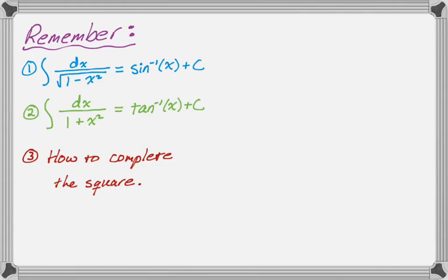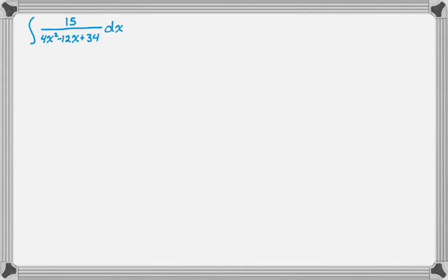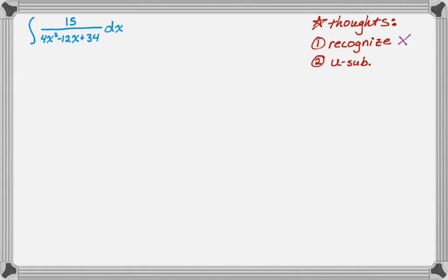So let's dive in and do an example. This first example has a lot of algebra in it. We want to do the integral of 15dx over 4x squared minus 12x plus 34. When I see an integral, my first thought is: do I recognize it? In this case I do not. My second thought is: is there some obvious u-substitution? Nothing here would work. My next thought is: is there a weird quadratic? There is, so I probably want to complete the square.